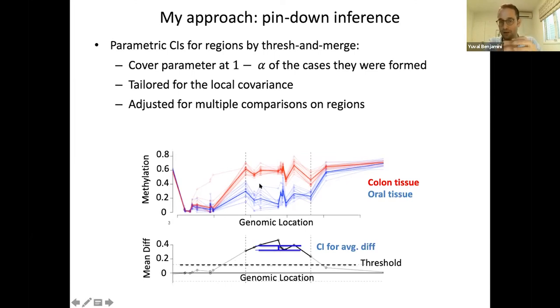Of course, the chromosome is huge. We have a lot of these regions. For each one, we can put a confidence interval. Then we can only retain these intervals that are interesting to us.